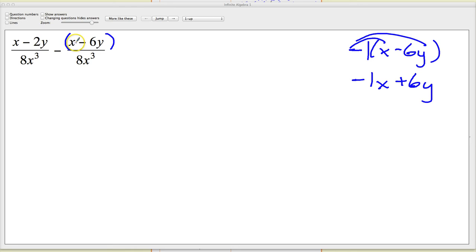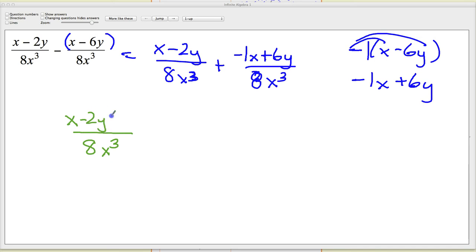That's what I'm going to combine. So this just becomes plus negative one x plus six y. If you do that, it causes you to reduce the chances that you'll make a mistake on these, which is that you forget to change the sign on the six y. So from here, it just sort of breaks out into one big problem. x minus two y plus negative one x plus six y.